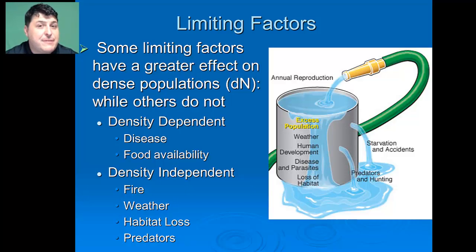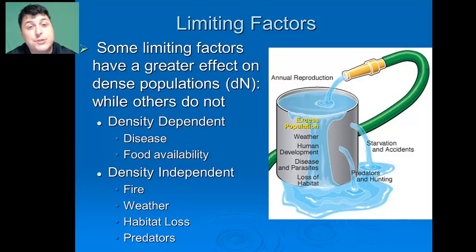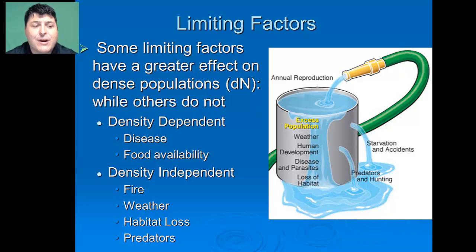Some living factors that are part of environmental resistance have a greater effect on really dense populations — when you have a lot of individuals in close quarters. Density-dependent factors that impact more dense populations more than less dense ones include things like disease or food availability. Whereas things like fire, weather, and predators will equally impact individuals whether the population is dense or sparse.